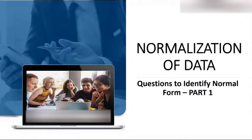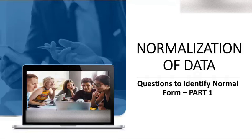Hello and welcome. Today the topic of discussion is normalization of data, and we are going to discuss questions to identify normal forms. Prior to this, we have discussed everything about normalization: first normal form, second normal form, questions on second normal form, third normal form, questions on third normal form, BCNF, and questions on BCNF. Now we are going to understand those questions generally asked in competitions like UGC, NET, GATE, and other organizations, where you have to identify which normal form a given relation is in.